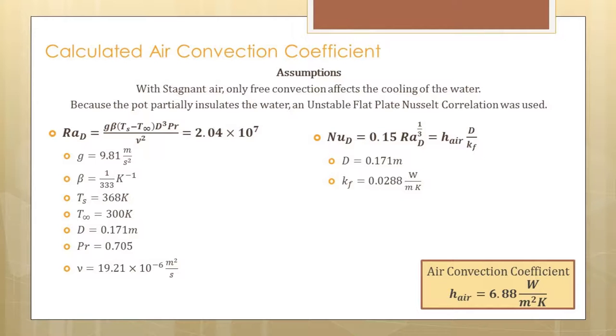The reason we did that is because we assumed that some of the insulation from the pot made that top surface of the water a flat plate that was unstable. We ended up finding that we had an air convection coefficient of 6.88 watts per meter squared Kelvin.